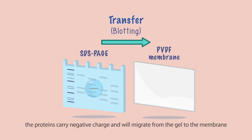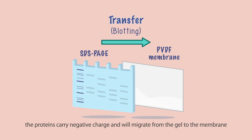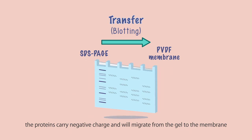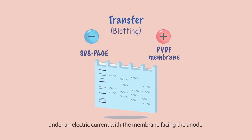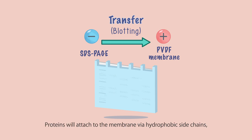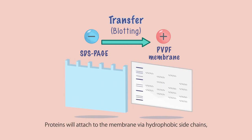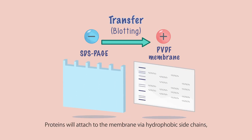the proteins carry negative charge and will migrate from the gel to the membrane under an electric current, with the membrane facing the anode. Proteins will attach to the membrane via hydrophobic side chains, completing the blotting process.